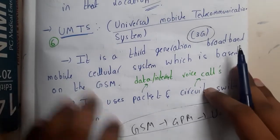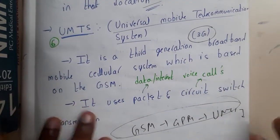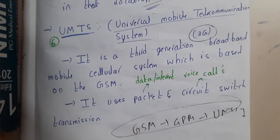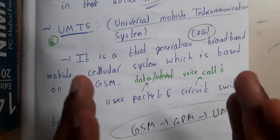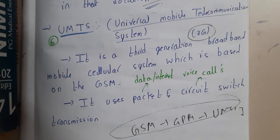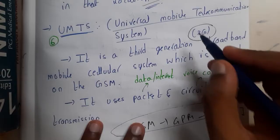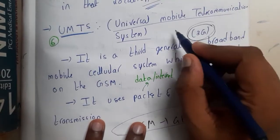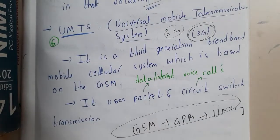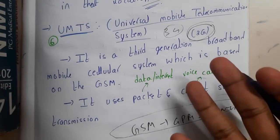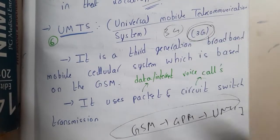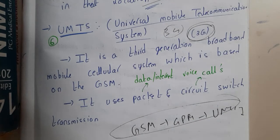Hello guys, we are back with our next lecture. In this lecture, let us go through the concept of UMTS — that is nothing but Universal Mobile Telecommunication System. This is the third generation of telecommunication, which is why it is called 3G. Previously, we used to use 3G SIMs or mobiles.